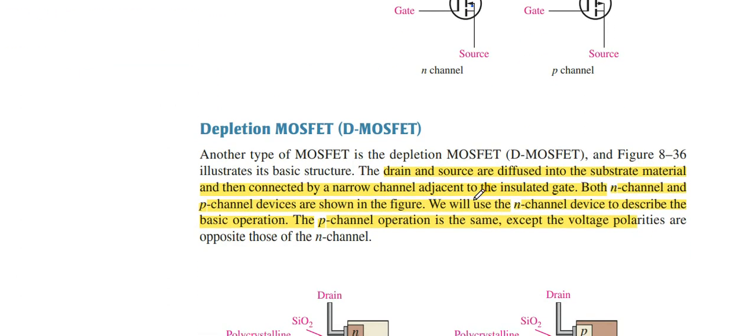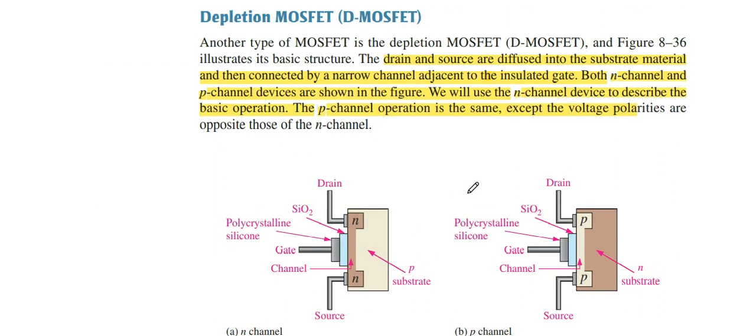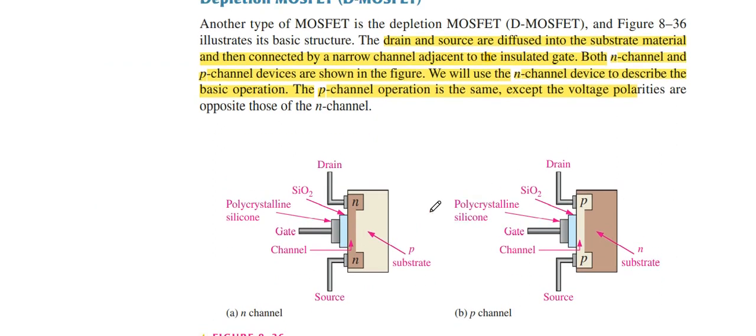Next point is D MOSFET. D MOSFET has this form of structure. This is N-channel, this is P-channel. D MOSFET has two modes.